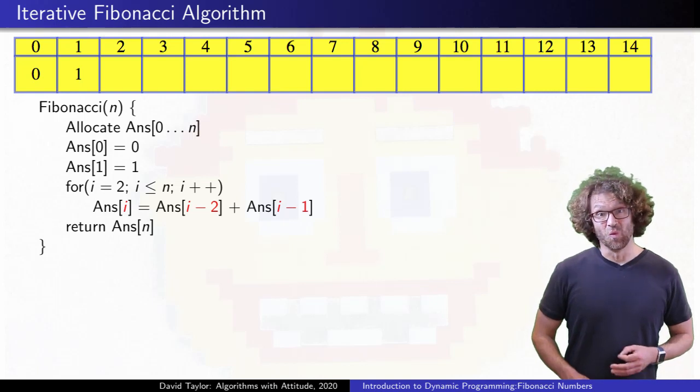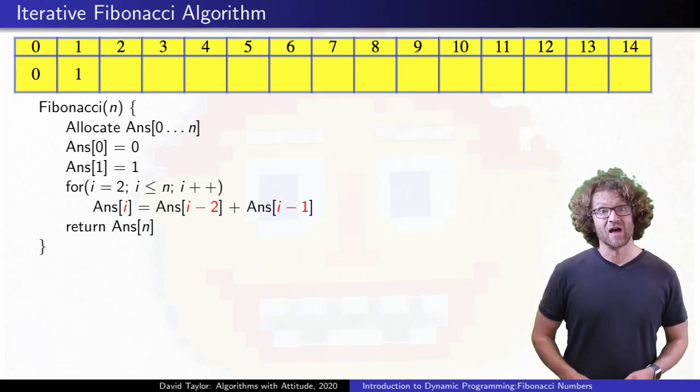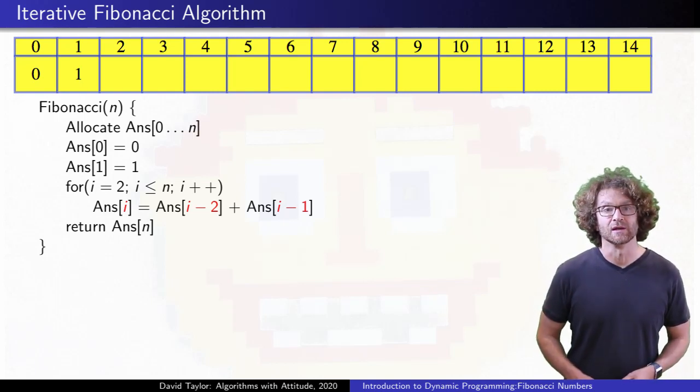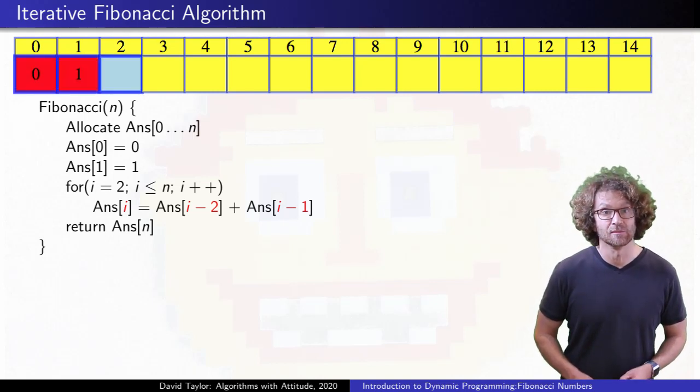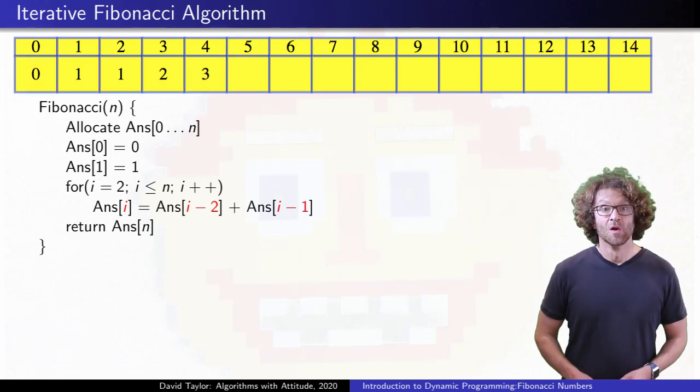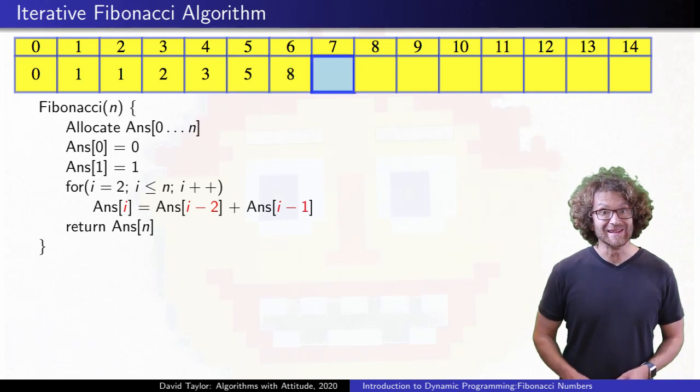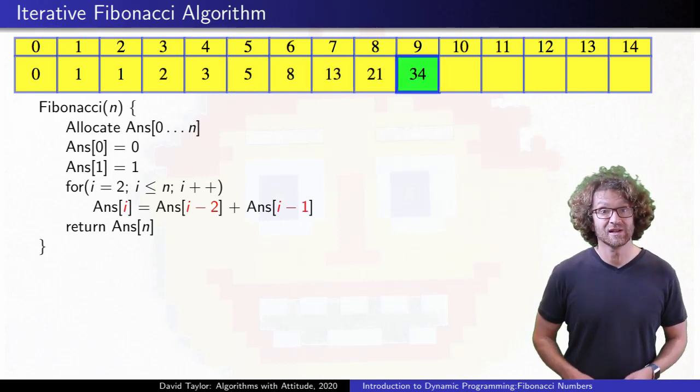Here, because it is just a one dimensional array, and each value needs the one to its left to be finished before it, there is only one way to fill in the table, left to right. But more complex problems will have multidimensional tables with more choices. Once we know what order the table needs to be filled in, we can just fill it in that order.